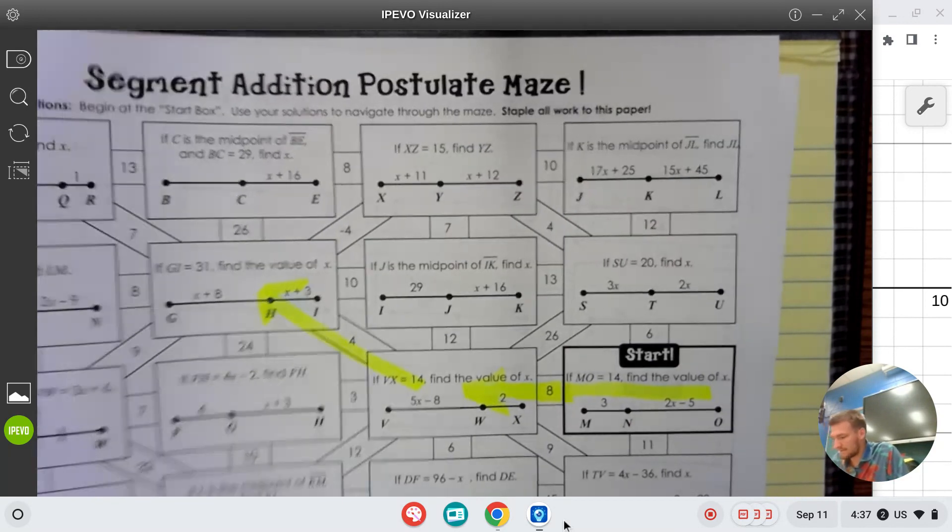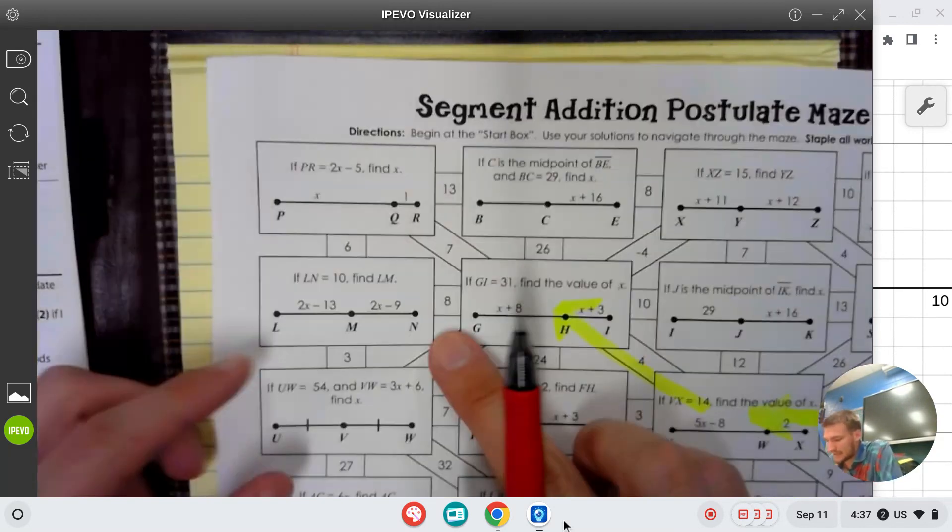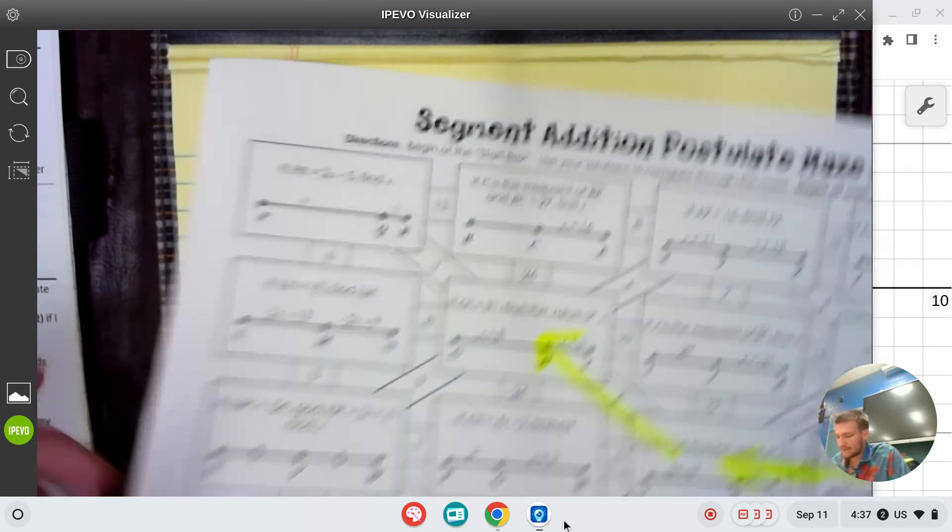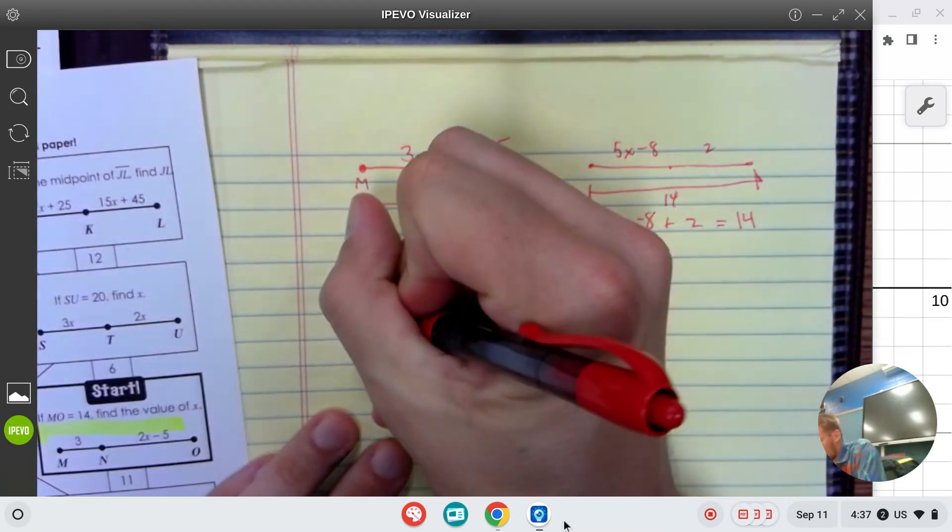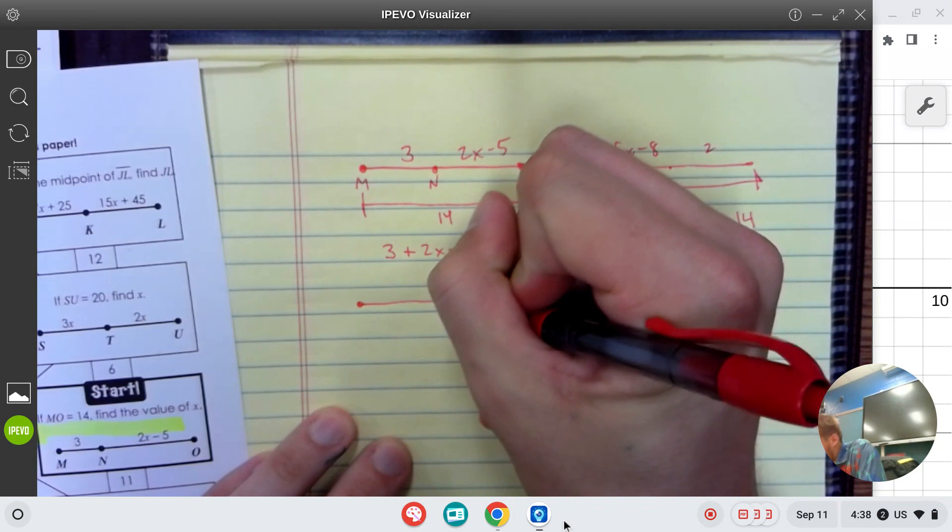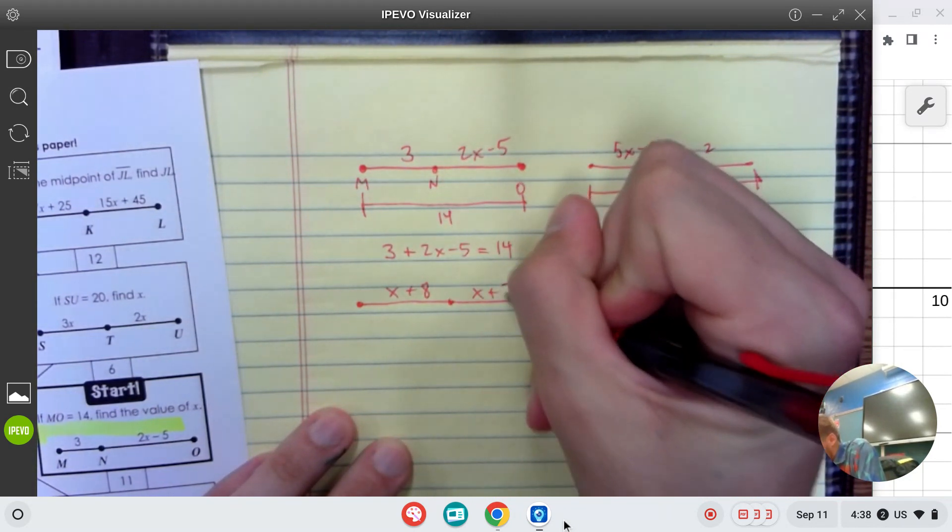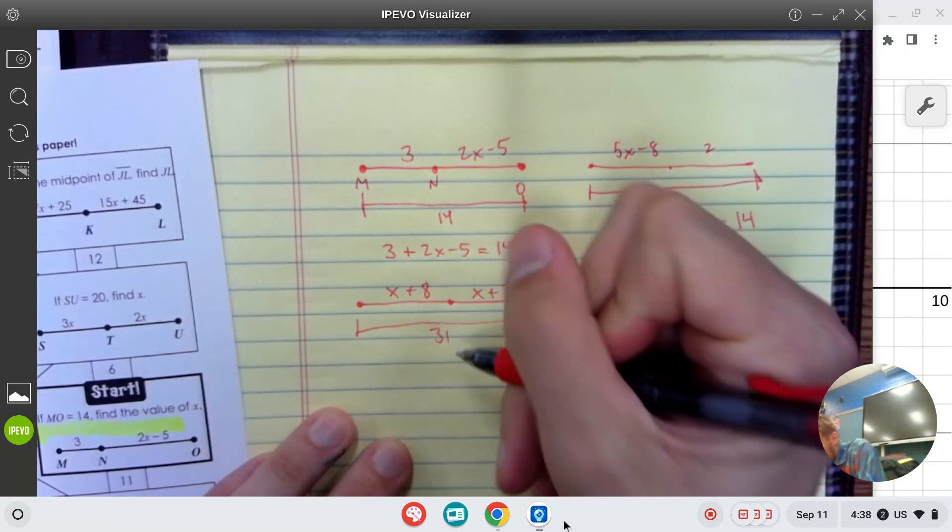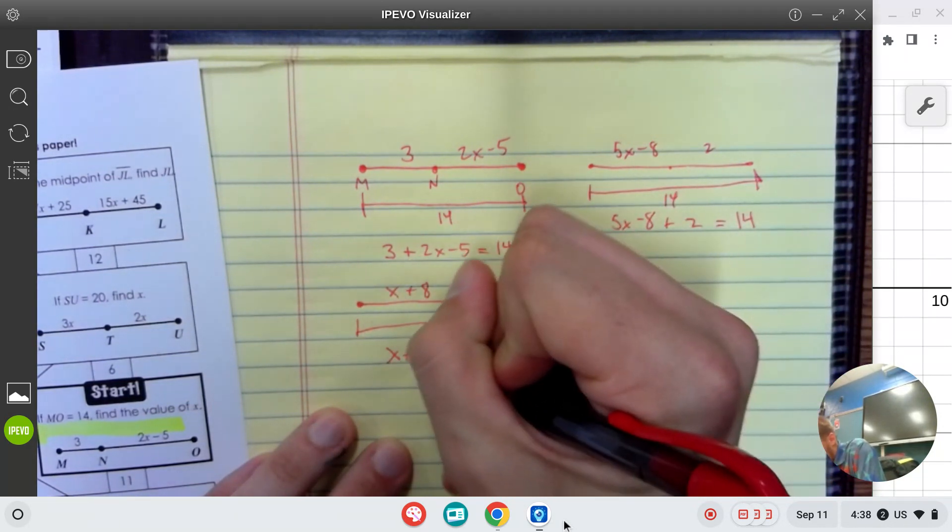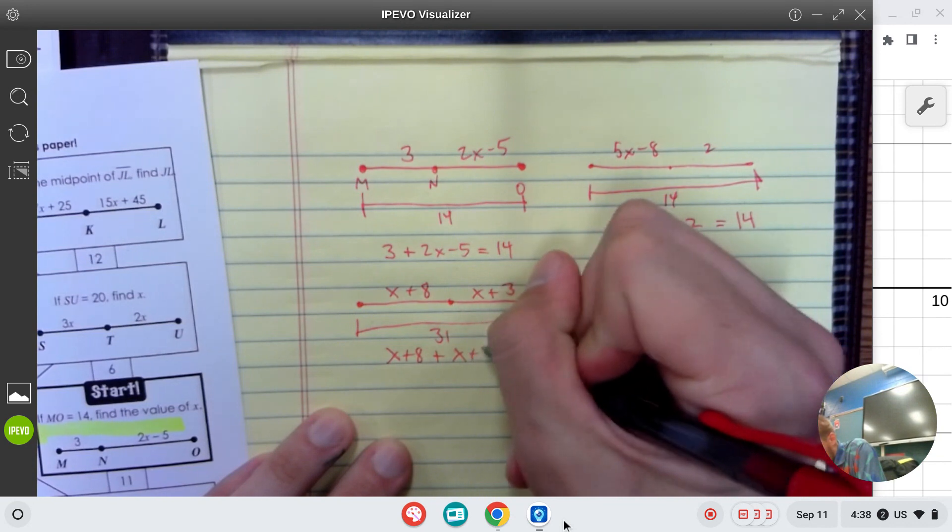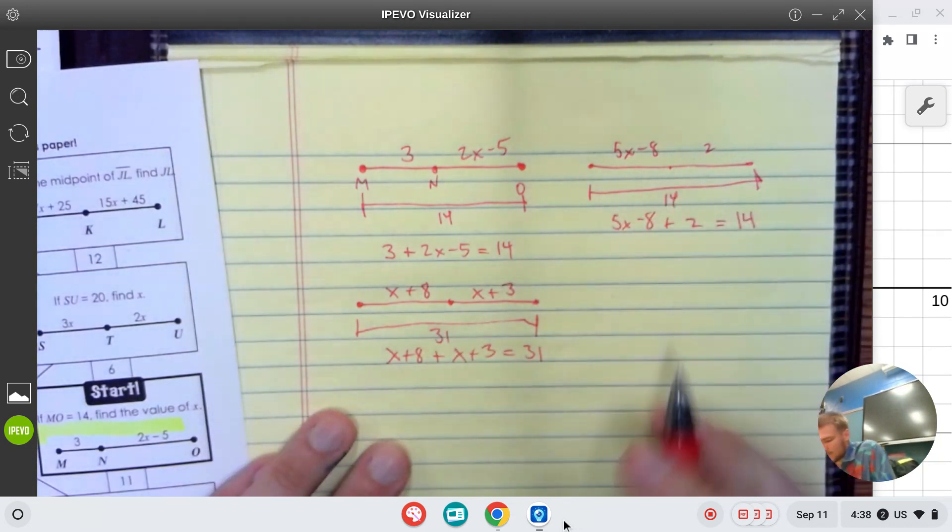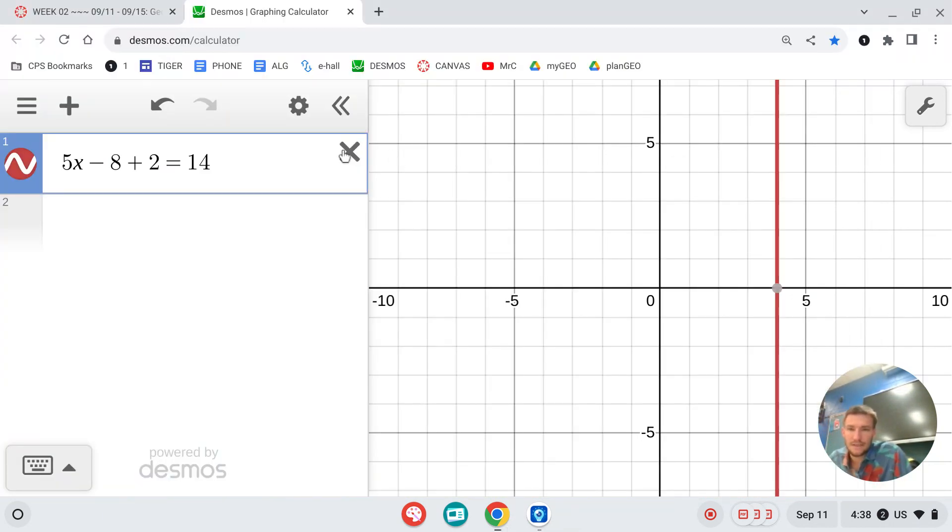Working here with this next one, it says that GI equals 31, that's the whole length. I see that the left is x plus 8, I see that the right is x plus 3, I see that the whole thing is 31. So I'm just going to set it up: x plus 8, that's the left, x plus 3, that's the right, is equal to the whole thing.